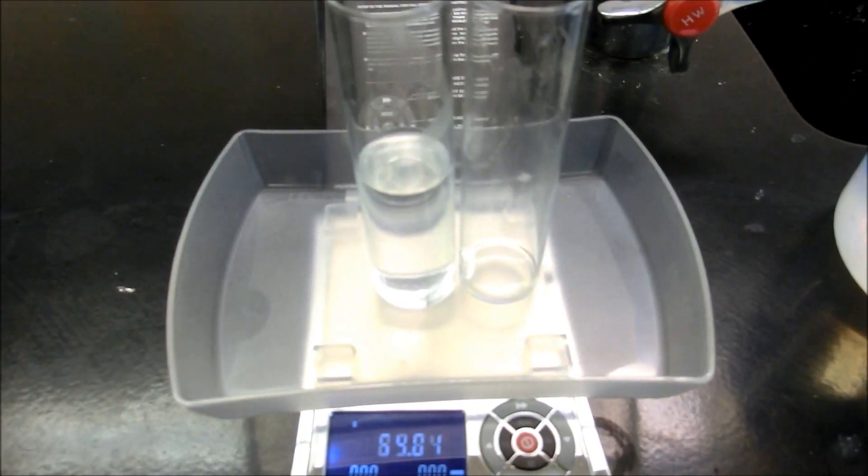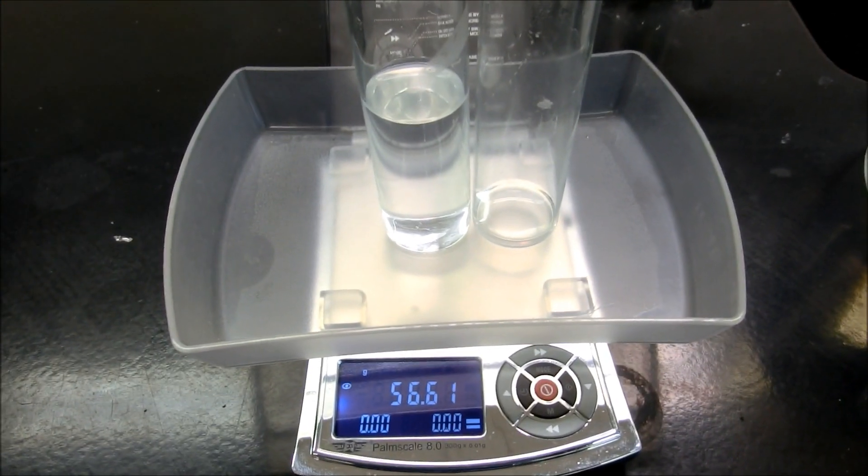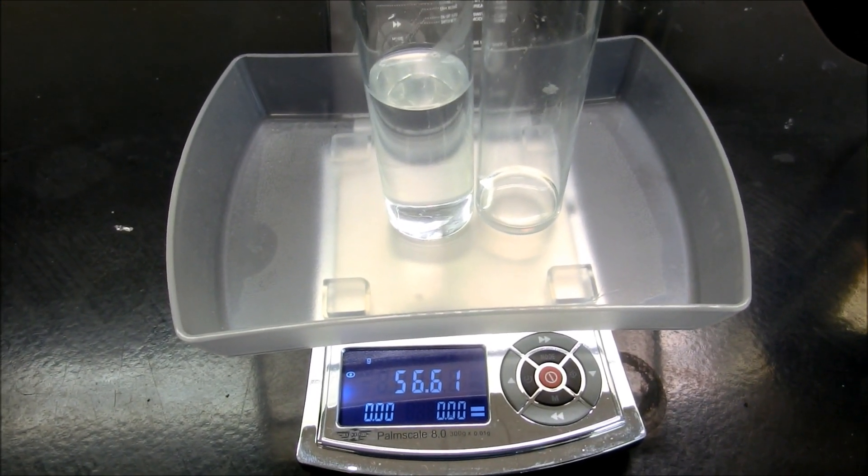The final mass of the sulfuric acid and the sodium hydroxide together ends up being 56.61 grams.